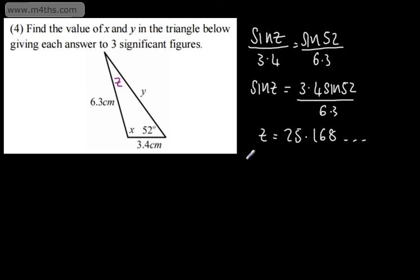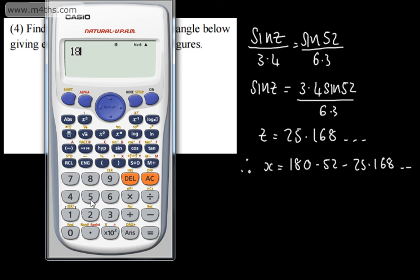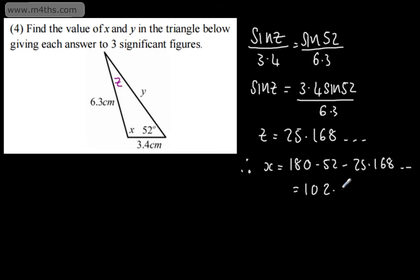At this stage I can say: therefore x will be equal to 180 minus 52 minus 25.168... that we have in the calculator. So if I do 180 minus 52 minus the answer we've just found, that gives me 102.831... So we can say that's going to be 103 degrees, and that is given to three significant figures. So that now gives us x.